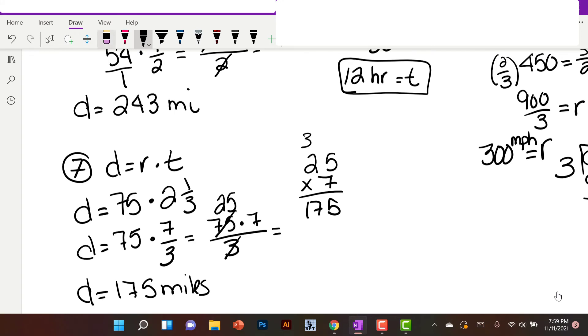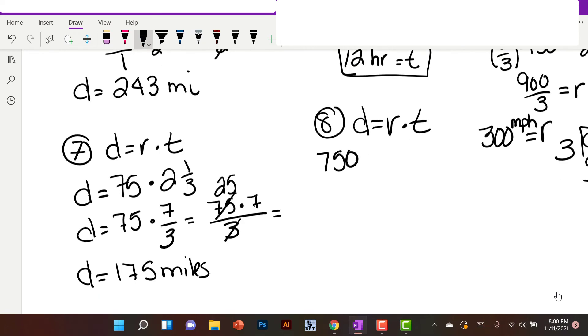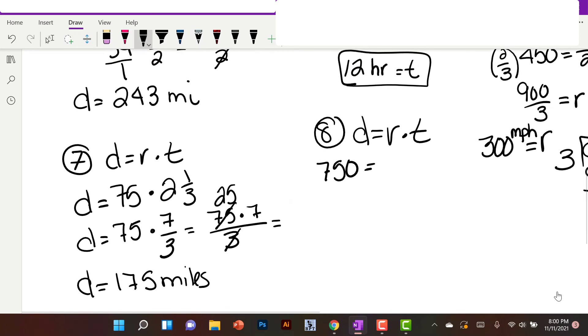Last but not least, number 8. Distance equals rate times time. The distance is 750 miles. The rate is a whopping 240 miles per hour. They want to know how long that will take. 750 equals 240t. Once again, I have a number next to a letter, that means to multiply. The opposite of multiplying is dividing. We're going to divide by 240 on both sides.